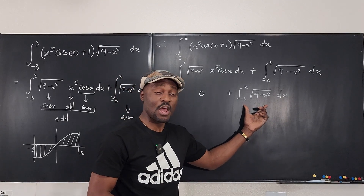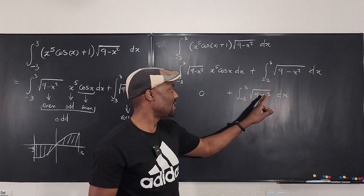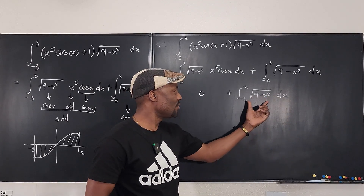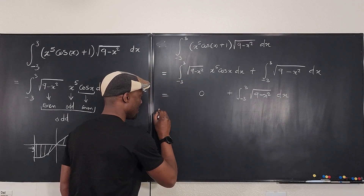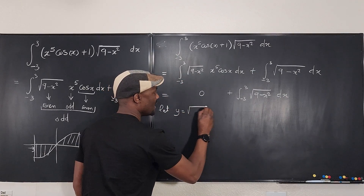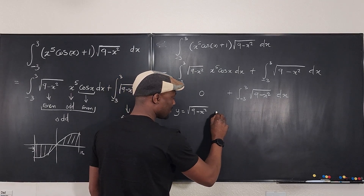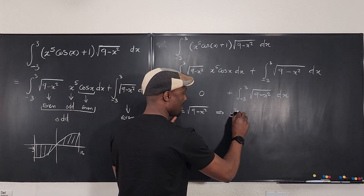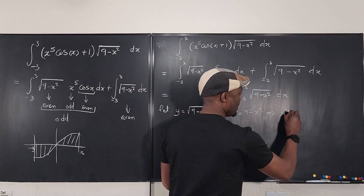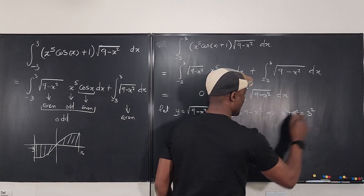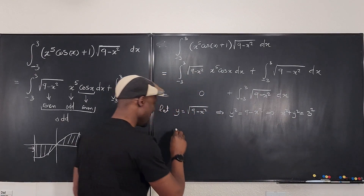Now how do you integrate this? You could use trig substitution, letting x = 3 sin θ, and then do that substitution. But I want to interpret this geometrically as a circle. If I let y equal √(9 − x²), then y² = 9 − x², and collecting like terms gives x² + y² = 3², which equals nine. This is the equation of a circle of radius three.